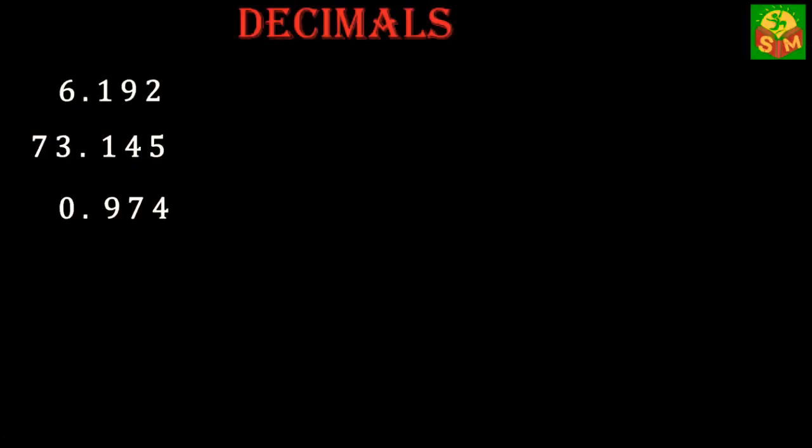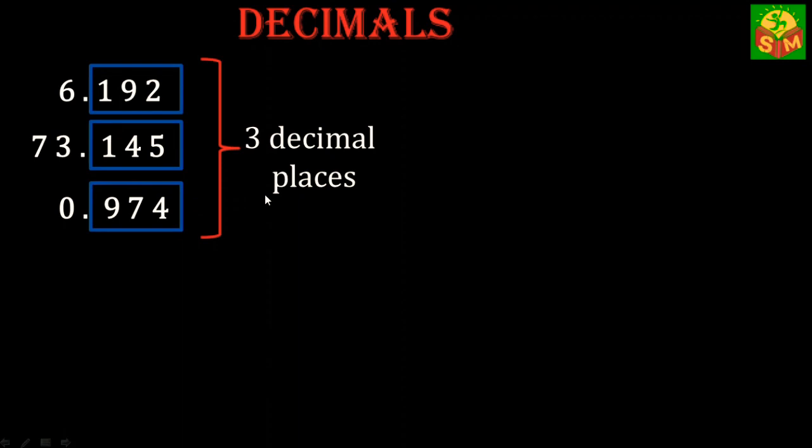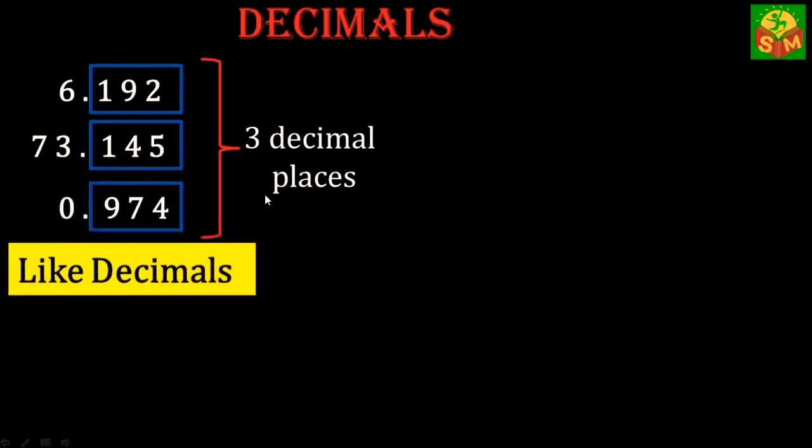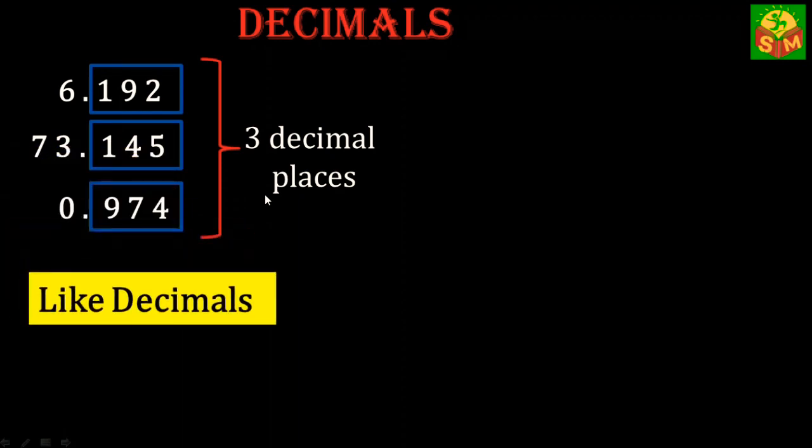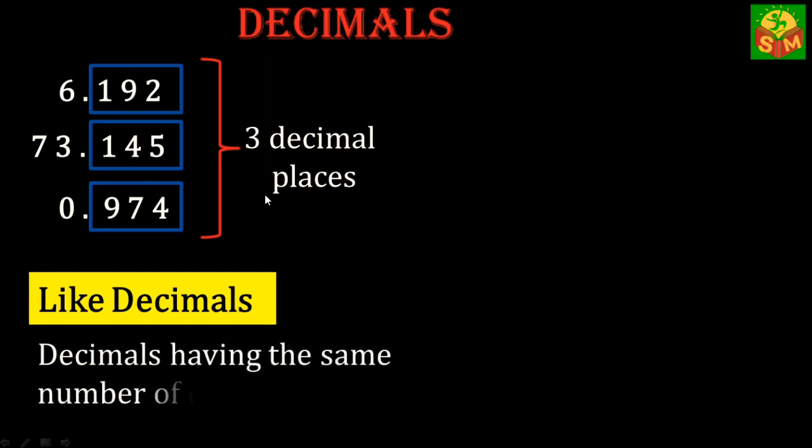I have already noted down some decimals here: 6.192, 73.145, and 0.974. What did you notice here? All three of them have the same number of digits in the decimal part - 3, 3, and 3, right? Such decimals are called like decimals. Decimals having the same number of decimal places are called like decimals.